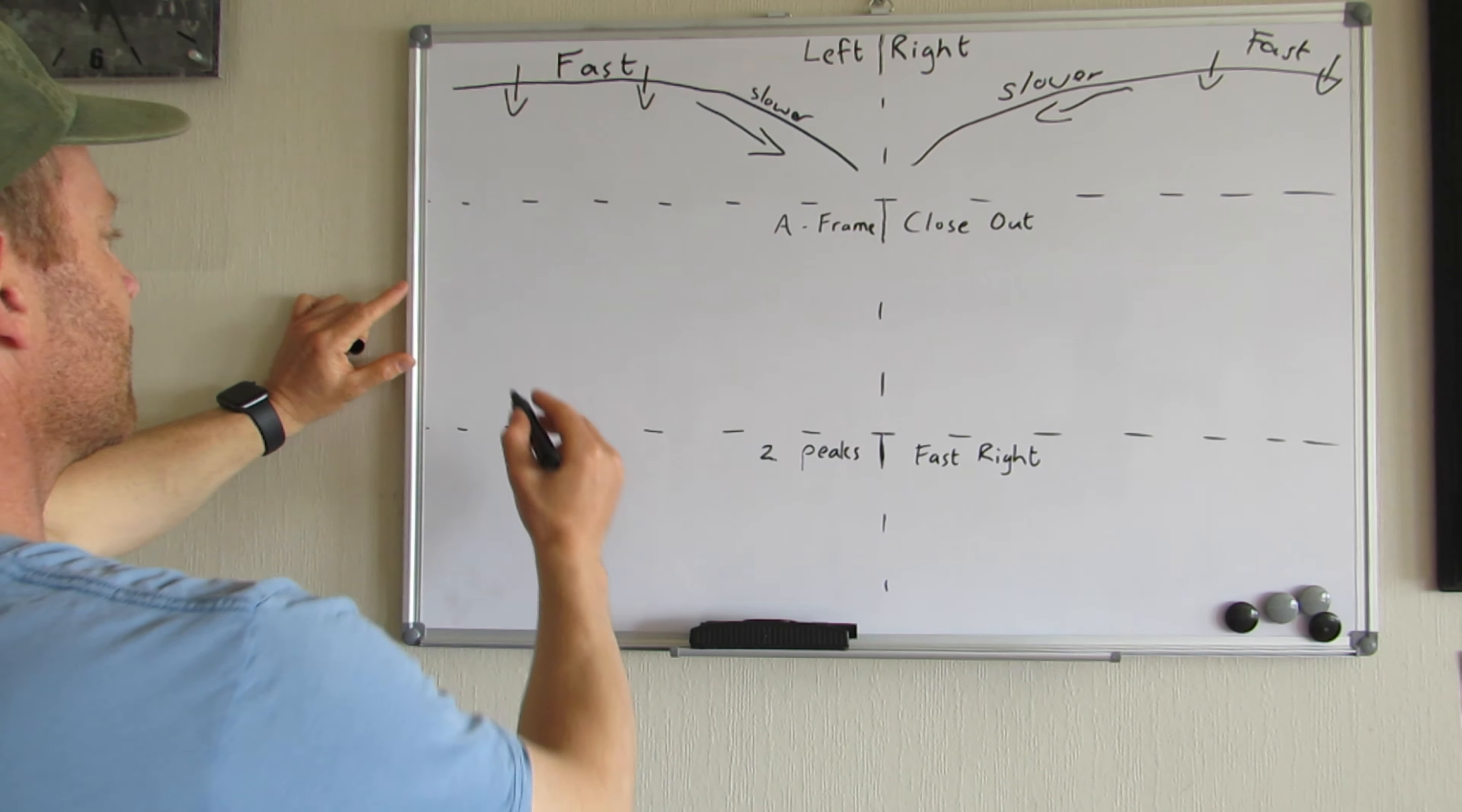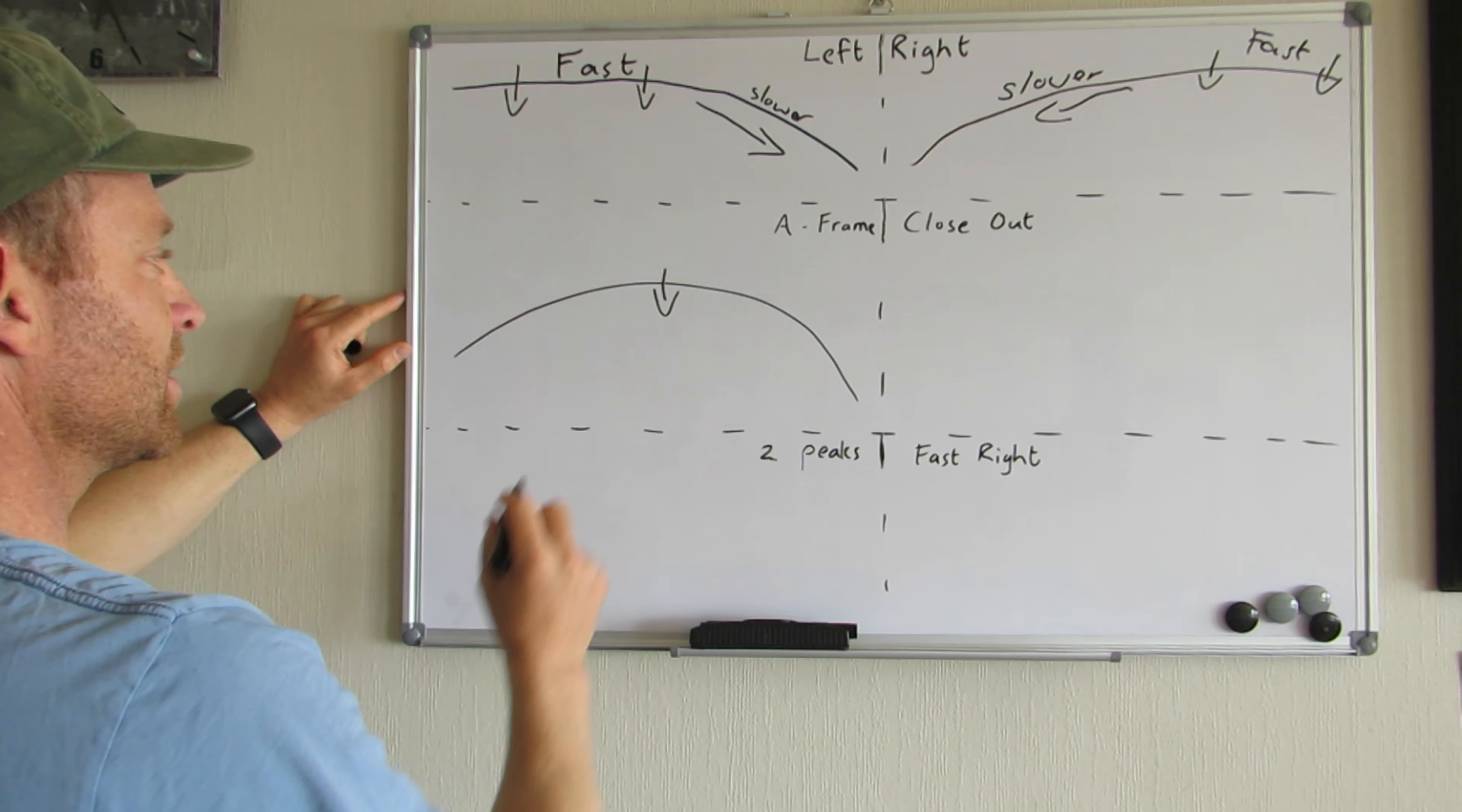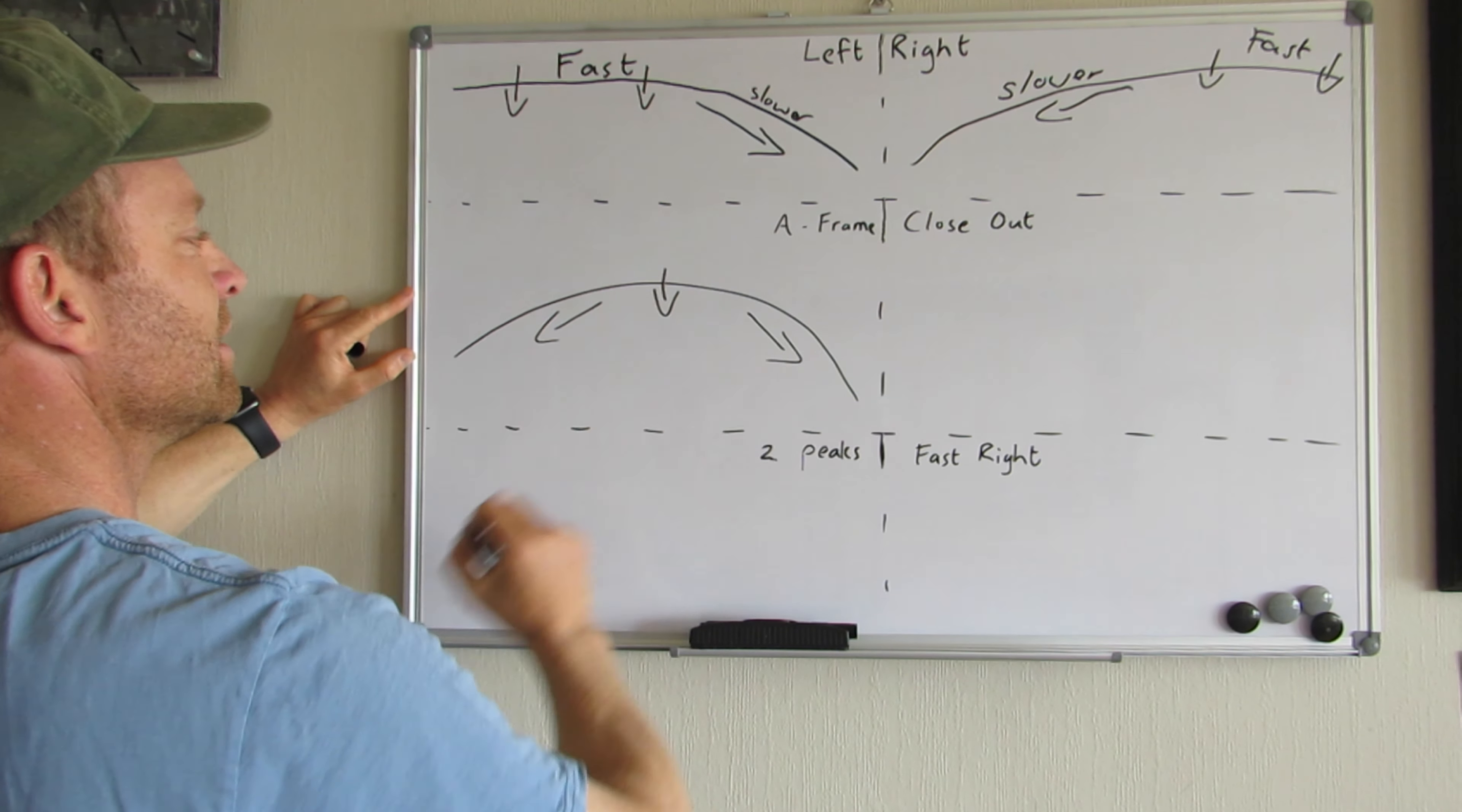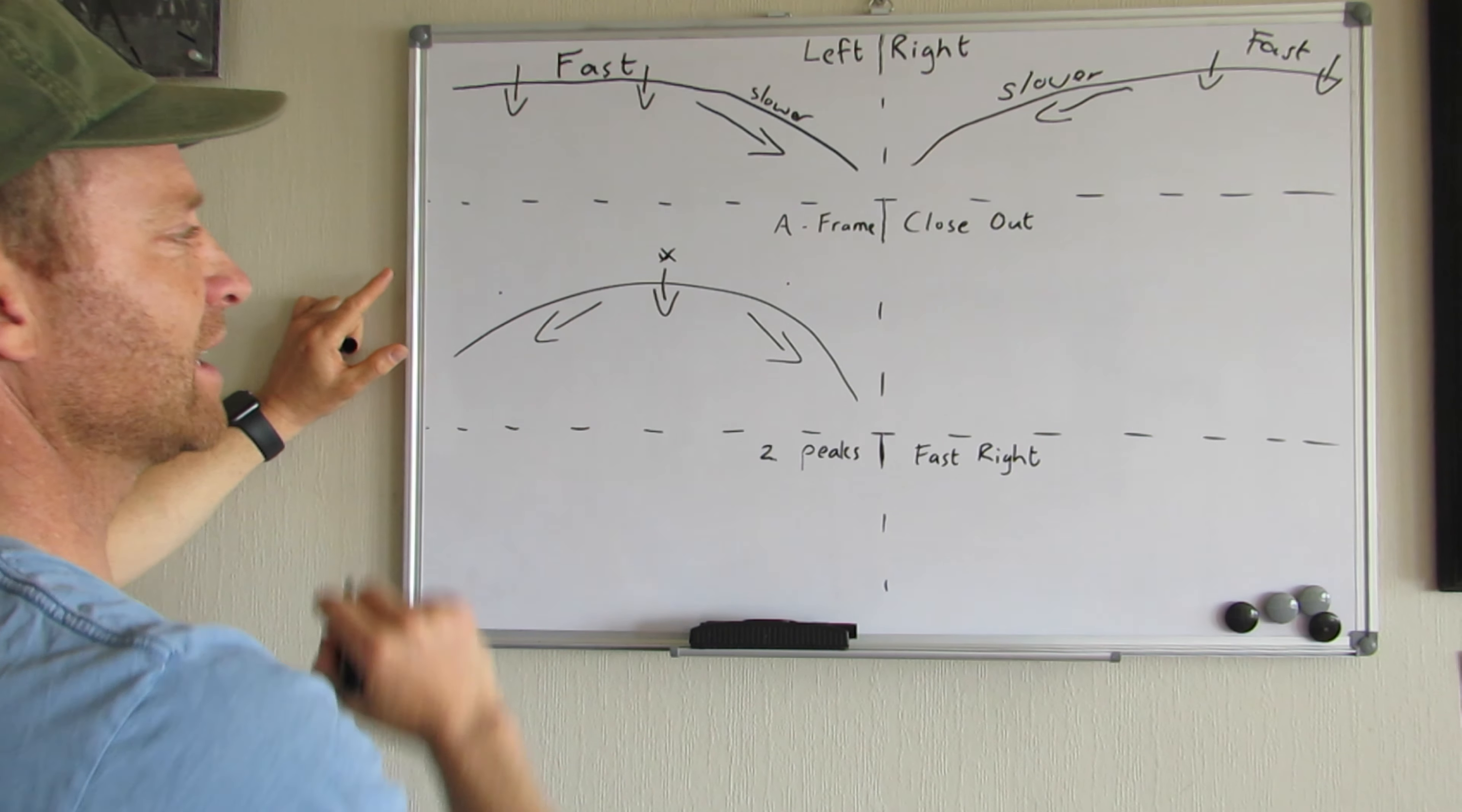And then over here, we're going to have an A-frame. This is the highest point. It's going to break and collapse over there first on the highest point and you can surf both towards the left and towards the right. So it's faster in this area and slower on those two points over there and that's an A-frame.